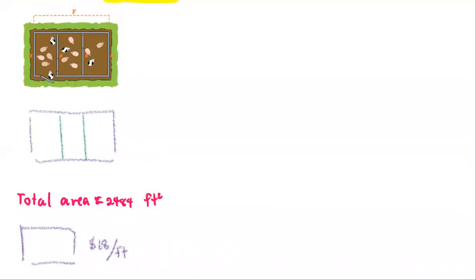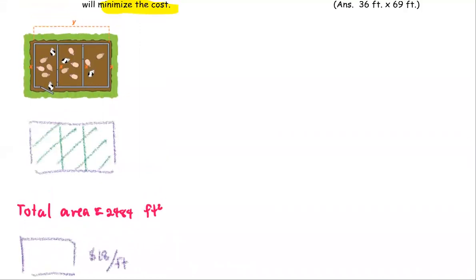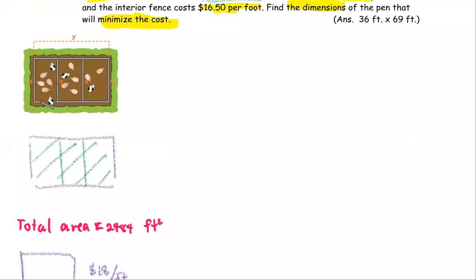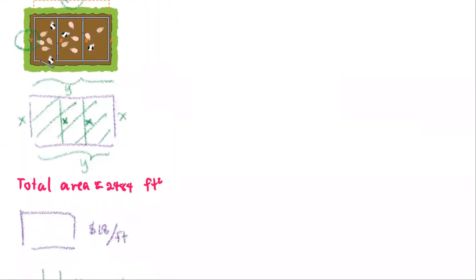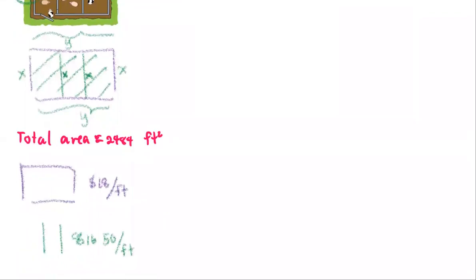For the total area — that is the area of the whole rectangle — the notation used in the problem has y representing the length and x representing the width. So the whole length is y, the opposite side is also y, and the two widths are both x. The interior fence measurement is also x because they are parallel.